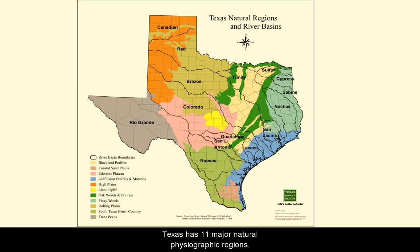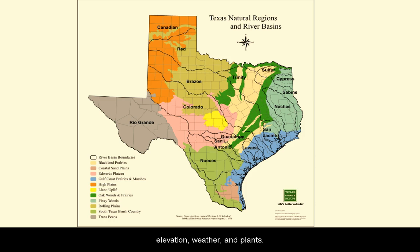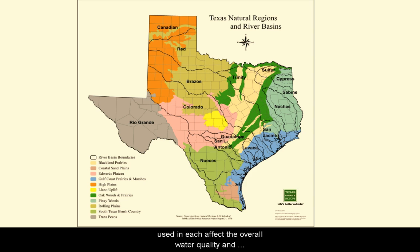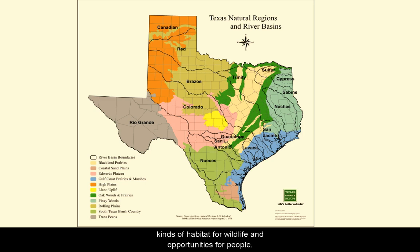We can often see the close tie between land and water. Texas has 11 major natural physiographic regions. These regions have different types of bedrock, soil, elevation, weather, and plants. These differences and the different ways the land is used in each affect the overall water quality and quantity in the watersheds. Each region has different kinds of habitat for wildlife and opportunities for people.